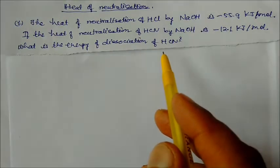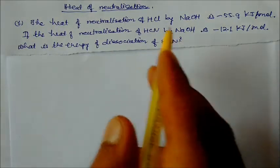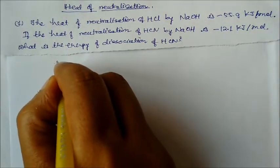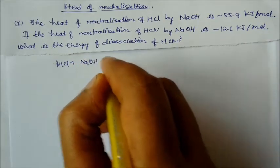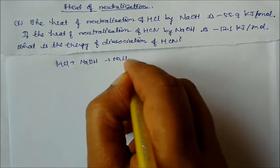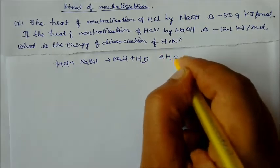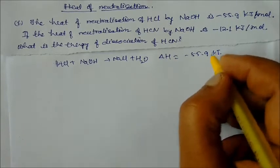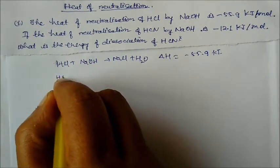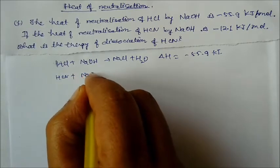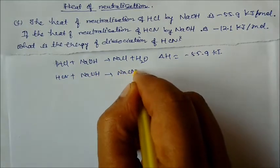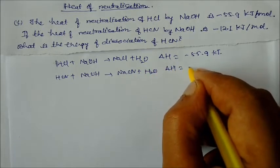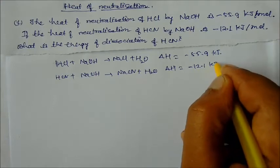Heat of neutralization is the reaction of acid and base. HCl reacting with sodium hydroxide gives NaCl plus water, where delta H is minus 55.9 kJ/mol. Similarly, the heat of neutralization of HCN with sodium hydroxide also gives NaCl plus water, where delta H of neutralization is minus 12.1 kJ/mol.